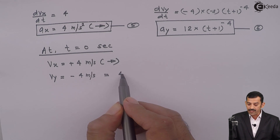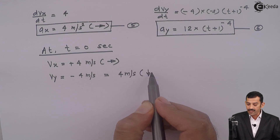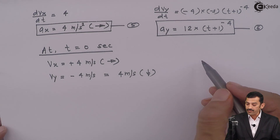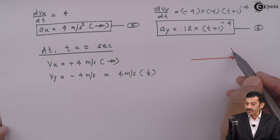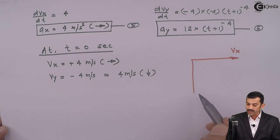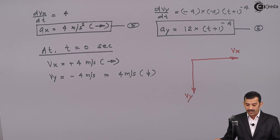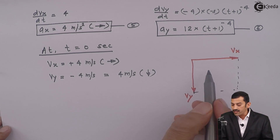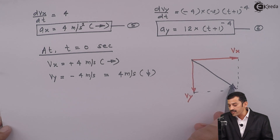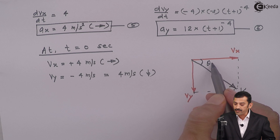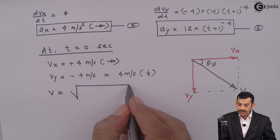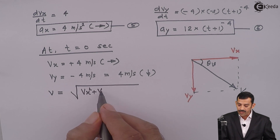As we are getting a negative answer for vy, it represents that vy acts in the downward direction. With vx rightward and vy downward, the resultant velocity will fall in the fourth quadrant. Representing this graphically: vx is rightward and vy is downward. These directions are very important — the negative answer for vy means downward, and the resultant velocity will be in this quadrant with inclination represented by theta v.